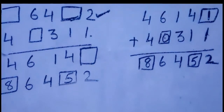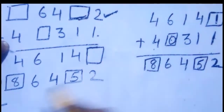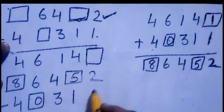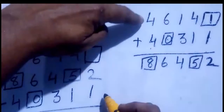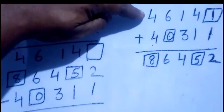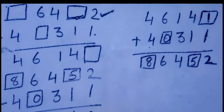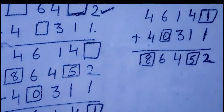So the number is 4 0 3 1 1, and when you subtract, you get the answer 4 6 1 4 and 1 in the last box. This is how you find the missing digits.